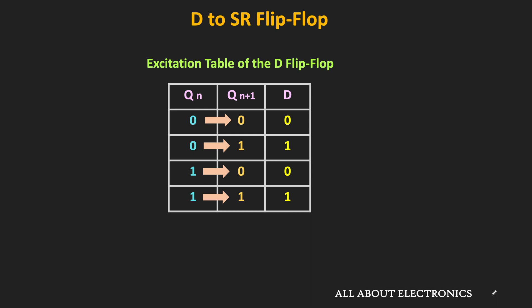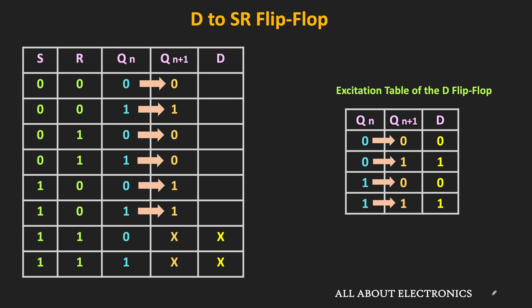As you know, for the D flip-flop the output is same as the input. So if you want 0 as the output, then the D input should also be equal to 0. And likewise, if you want 1 as the output, then the D input should also be equal to 1. This is the excitation table of the D flip-flop, and using this we can easily complete the table. From the excitation table, to get the output as 0, D input should be 0, and to get the output as 1, D input should be 1, and likewise we can complete the entire table.